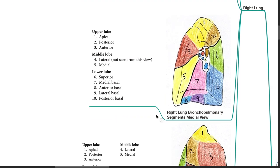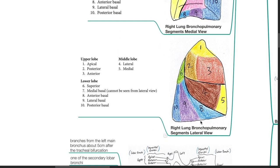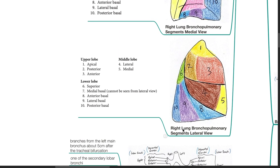This diagram shows the right lung bronchopulmonary segments in medial view. This diagram shows the right lung bronchopulmonary segments in lateral view.